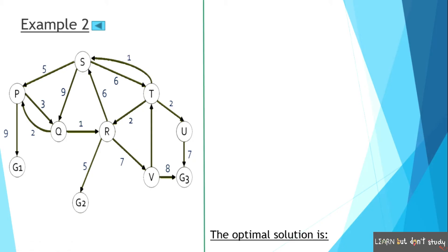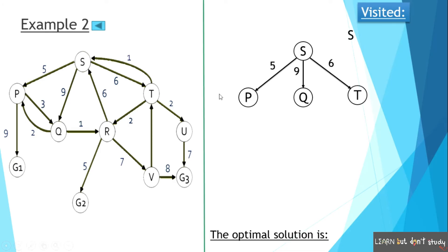First, we can visit the root node. We write S as the root node. Now we can write the paths from the root node. In S, there is P, Q, and T. P has a total cost of 5, Q has a total cost of 9, and T has a total cost of 6. In these 3 nodes, we look at the total cost from the root node. We then visit the next lowest-cost node.